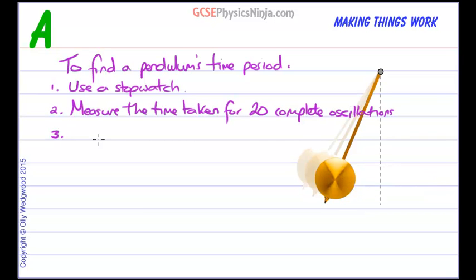Part three: Divide this time by 20. And that will give you the average time for each oscillation, which we call the average time period. And that method will be a lot more accurate because you're taking an average, you're reducing the effect of all the random errors such as human reaction time.